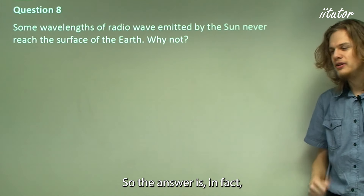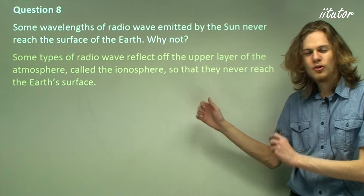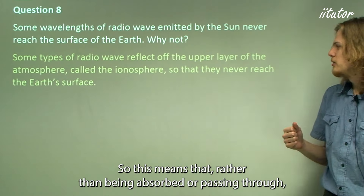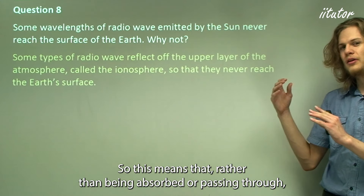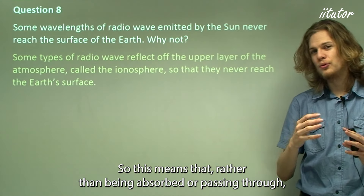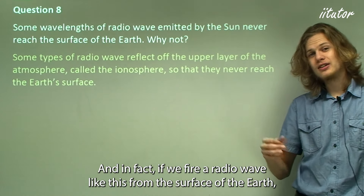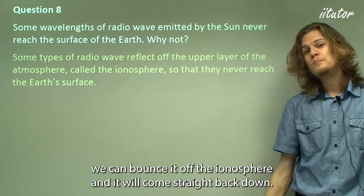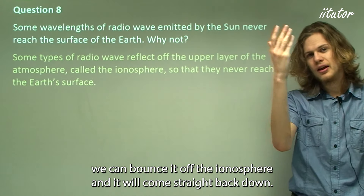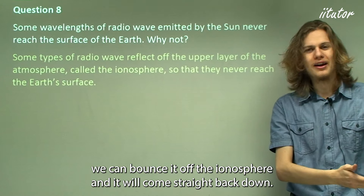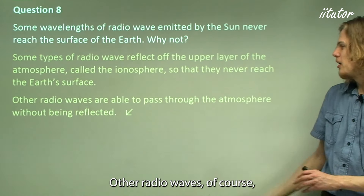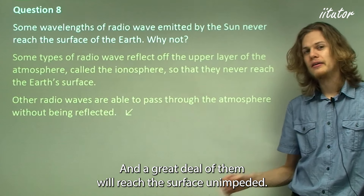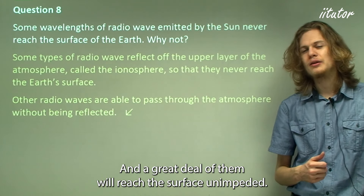The answer is that they reflect from the upper layer of the atmosphere — they just bounce off and never reach the ground. This means that if we fire a radio wave from the surface of the Earth, we can bounce it off the ionosphere and it will come straight back down, which can be quite useful. Other radio waves are able to pass through the atmosphere without being reflected, and a great deal of them reach the surface unimpeded.